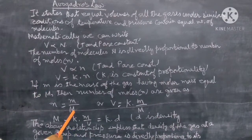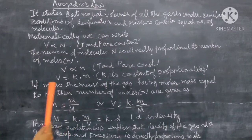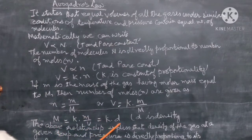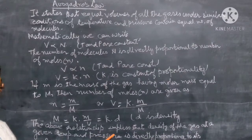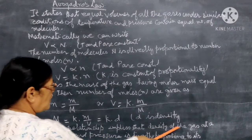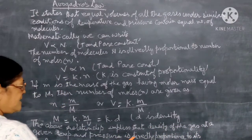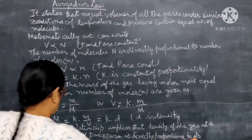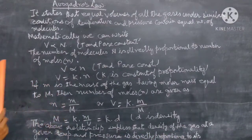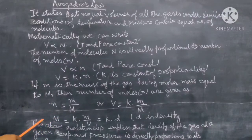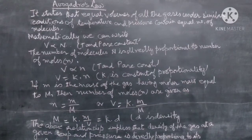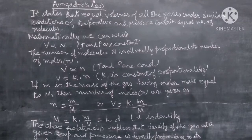Since K is the constant of proportionality, we can say M is directly proportional to D. The above relationship implies that the density of the gas at a given temperature and pressure is directly proportional to its molar mass. So this relationship gives that the molar mass of the gas is related to the density, or we can say density is directly proportional to the molar mass of the gas.